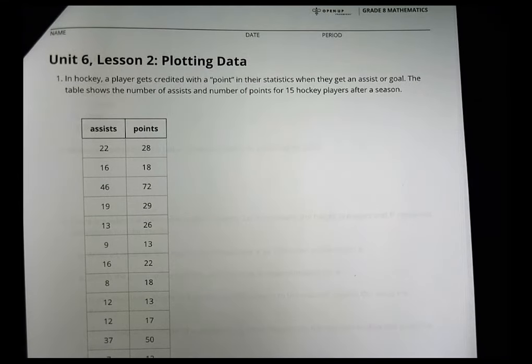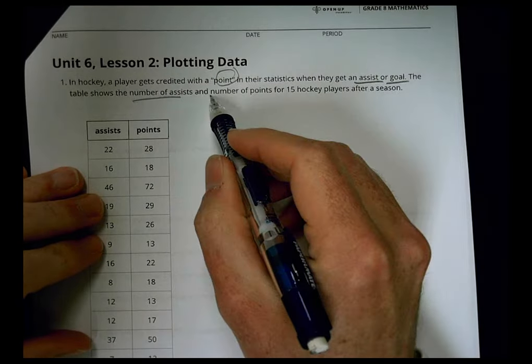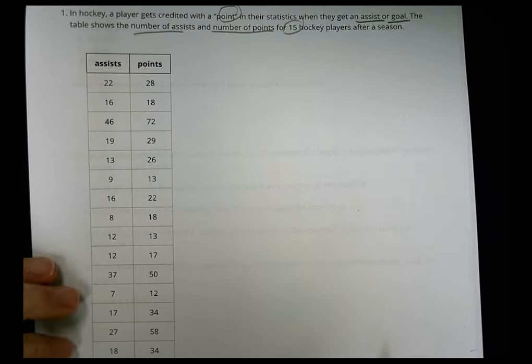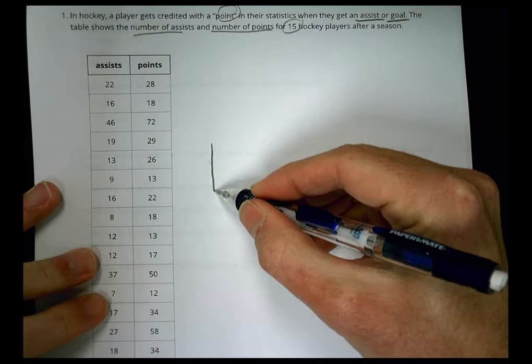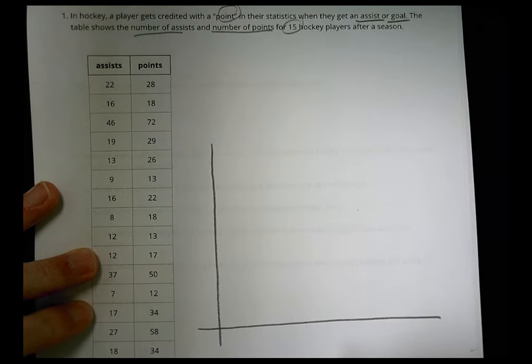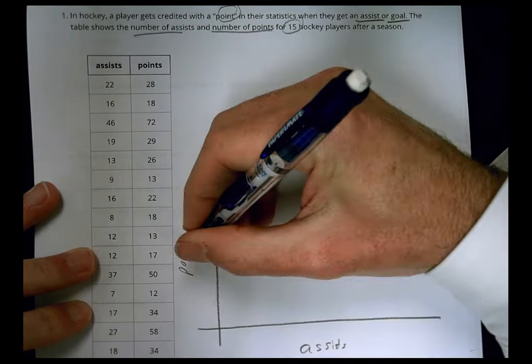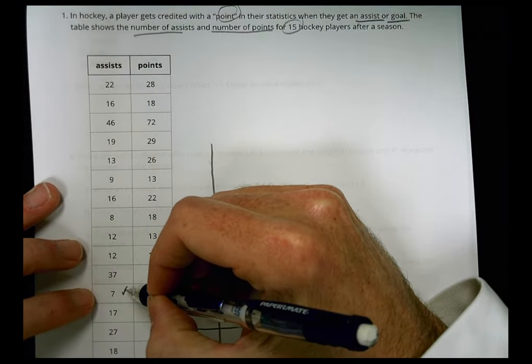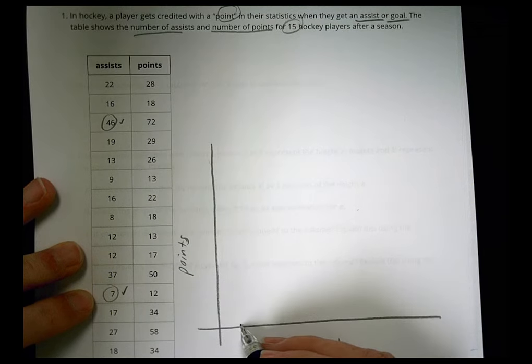All right. Here's homework for Unit 6, Lesson 2, plotting the data. In hockey, a player gets credited with a point in their statistics when they get an assist or a goal. So you get a point when you have an assist or a goal. The table shows the number of assists and the number of points for 15 hockey players after a season. So we can see their assist here, and we see the points that they earned there. It wants you to make a scatter plot of this data and make sure to scale and label the axes.